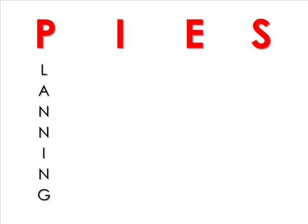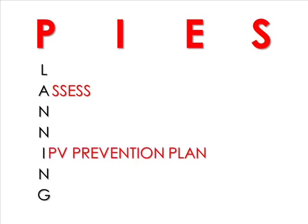Now let's see how these steps fit into the PIES framework. Before anything happens, we need to assemble our stakeholders into a prevention coalition. Then, as we begin the planning process, we will assess our community and examine the underlying conditions and risk and protective factors present. After that, we and our partners should devise plans: one to determine how we plan to prevent domestic and sexual violence locally, and one to evaluate that plan and any efforts that develop from it.